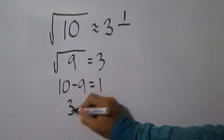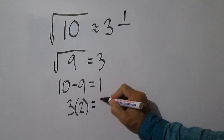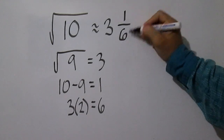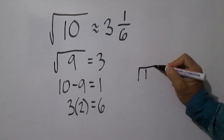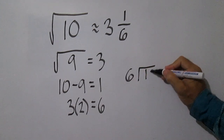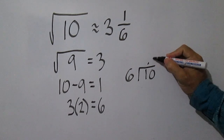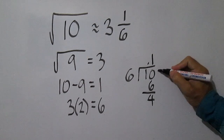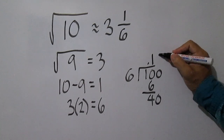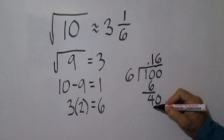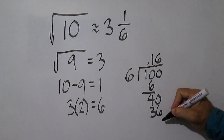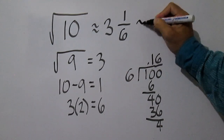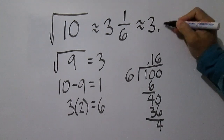3 times 2 equals 6. Divide 1 by 6. The square root of 10 is approximately equal to 3.16.